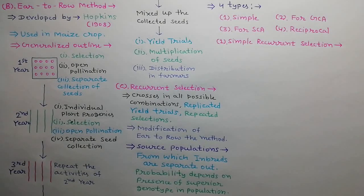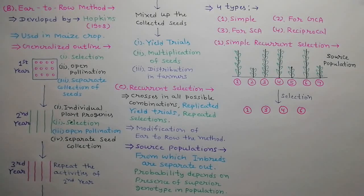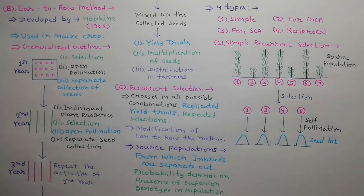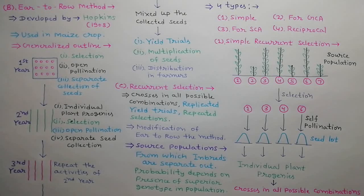For simple recurrent selection, suppose there are seven plants in a source population. Plant number 1, 3, 4, and 6 are selected as they appear superior. Self-pollination is allowed in these selected plants and separate seed lots are obtained. These separate seed lots are used to grow individual plant progenies, and then crosses are allowed in all possible combinations. These five steps together constitute one selection cycle. Two or more selection cycles are repeated in simple recurrent selection.